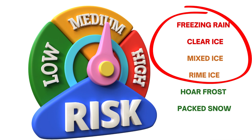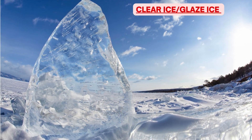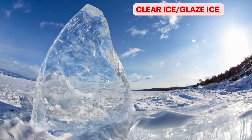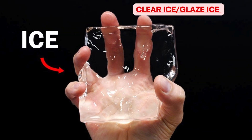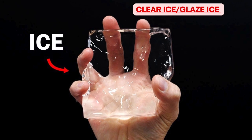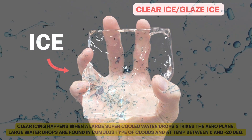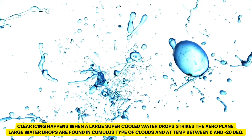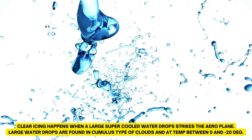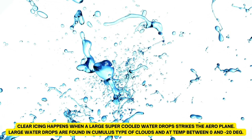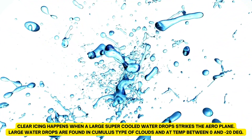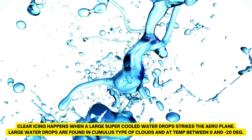Irrespective of degree of danger, we will start with clear ice first. Clear ice is also called glaze ice. As the name suggests, this type of ice is clear or semi-transparent. The reason for being clear is that there is no air trapped between two layers of ice. Clear icing happens when a large supercooled water drop strikes the aeroplane, and large water drops are found in cumulus type clouds at temperatures between 0 and minus 20 degrees.